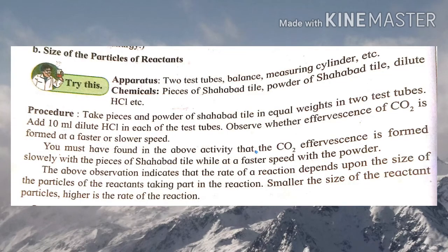Number two is the size of particles of the reactant. Consider the reaction of pieces of marble tiles with HCl and the reaction of powder of marble tiles with HCl. In both reactions, CO₂ effervescence is created. But effervescence of CO₂ is faster with marble powder compared to marble pieces. Therefore, the reaction of marble powder with HCl is faster than that of marble tiles with HCl. Thus, we conclude that smaller the size of the reactant, higher is the rate of reaction.